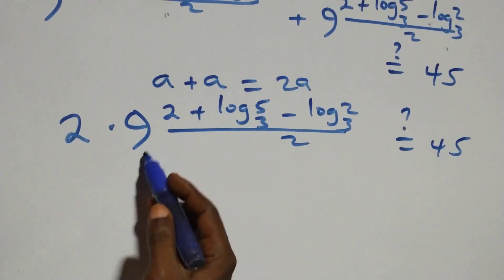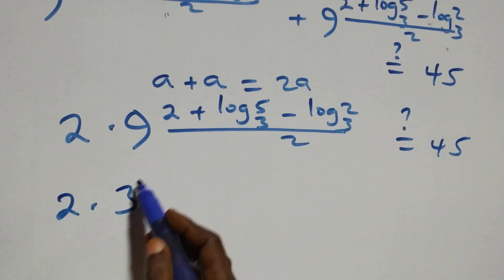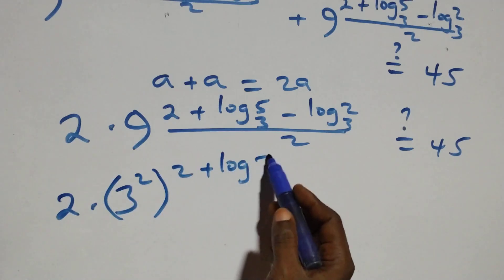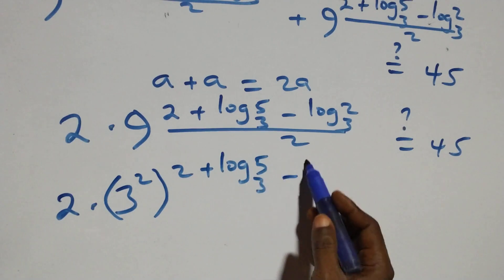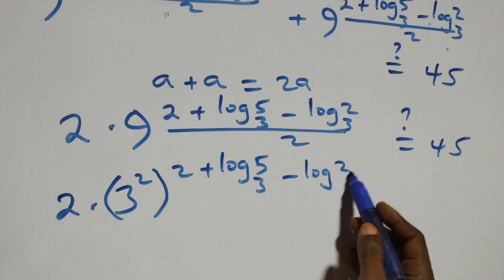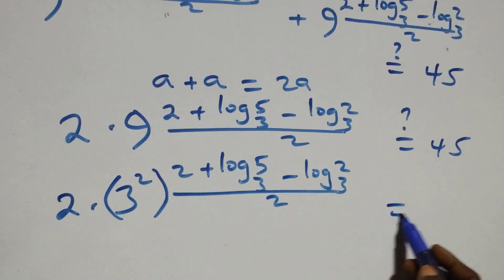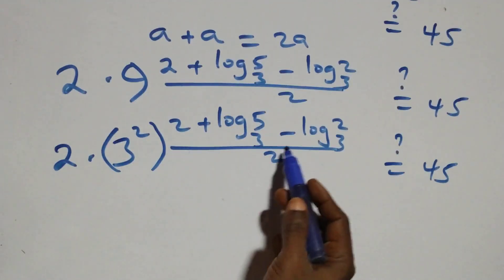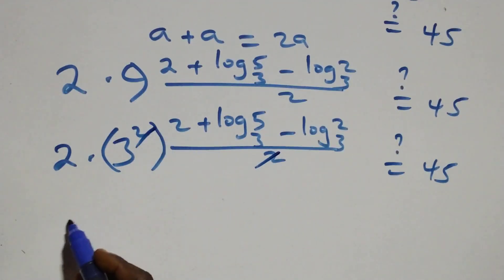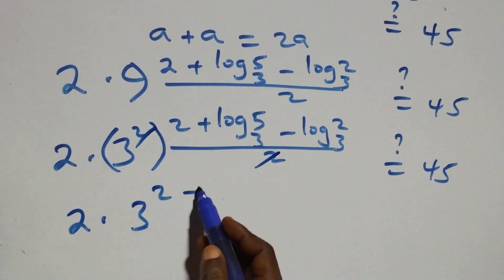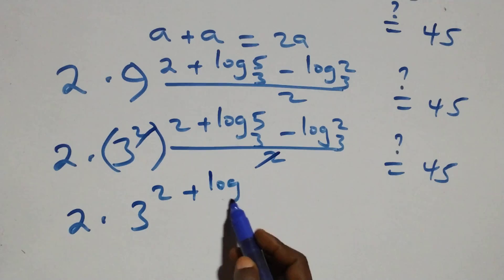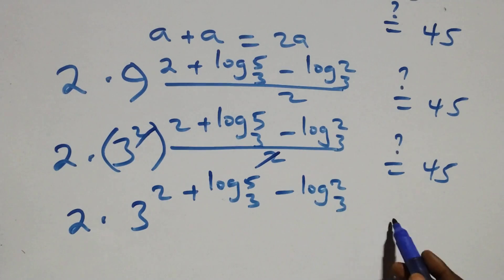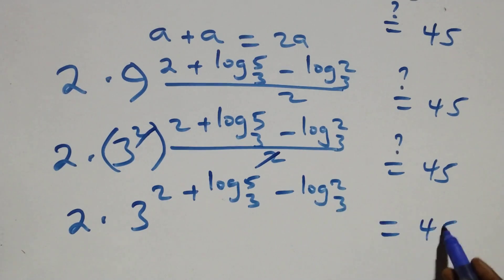Then next step, we can write 9 as 3 squared. That is, we have 2 times (3 squared) raised to power (2 plus log₃5 minus log₃2, all over 2). The power of 2 and the denominator of 2 cancel each other, and we are left with 2 times 3 raised to power (2 plus log₃5 minus log₃2). Is this equals to 45?